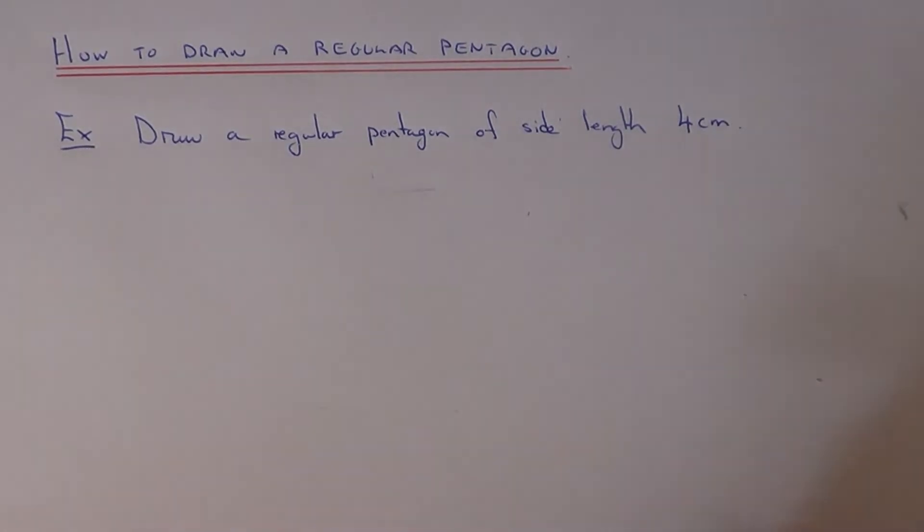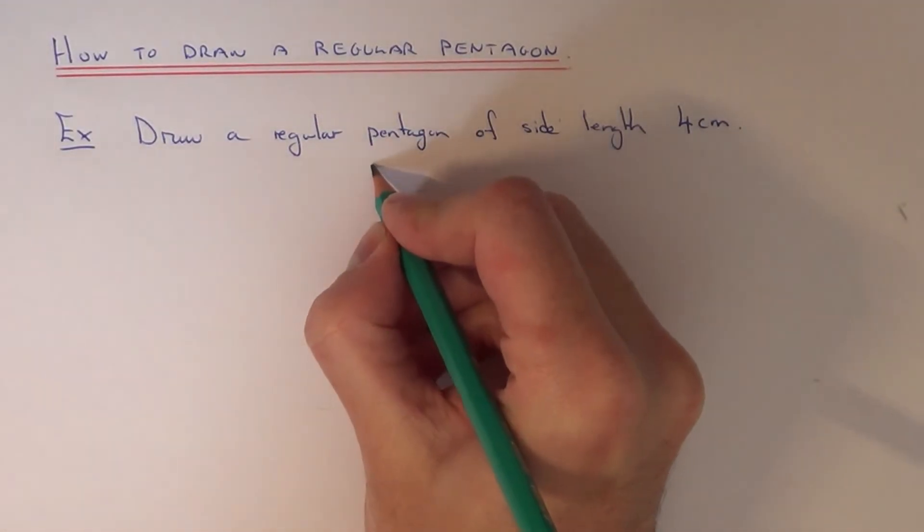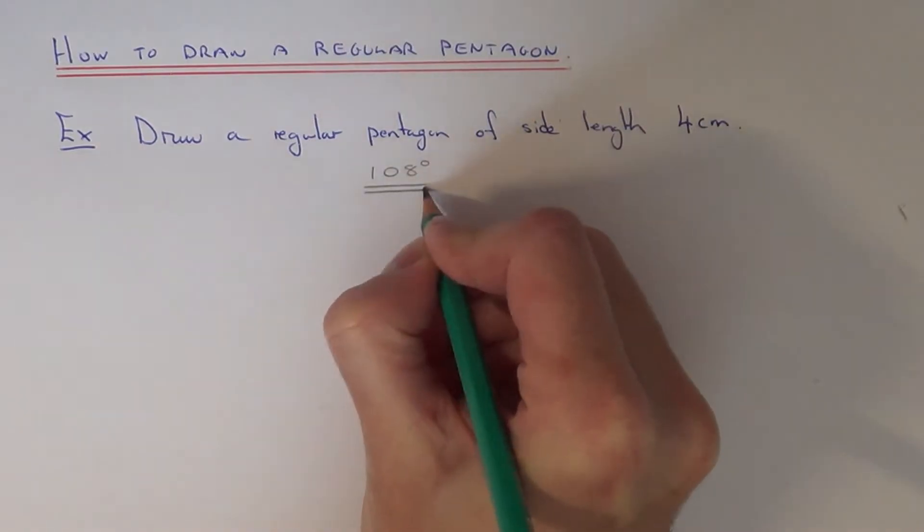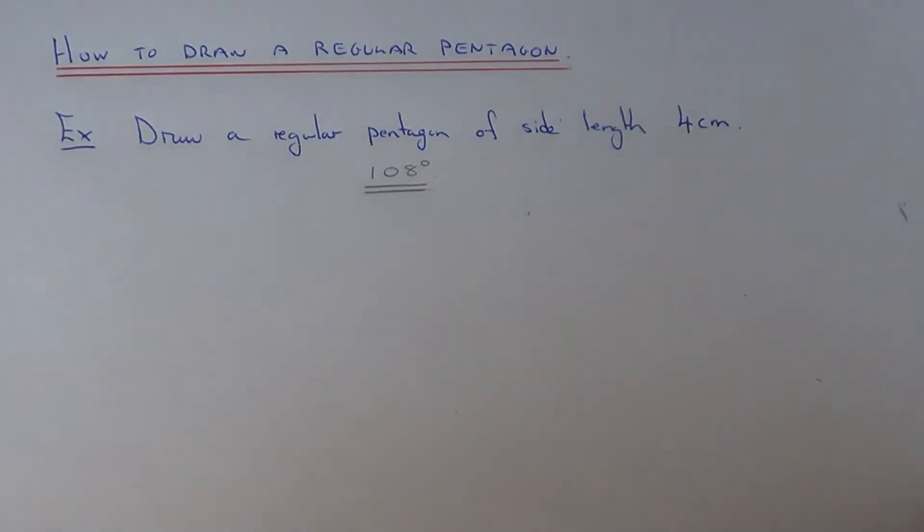And the other thing you need to know about a regular pentagon is that the interior angle is 180 degrees. And this is the angle which you need to measure using your protractor. So let's have a look at the example here.